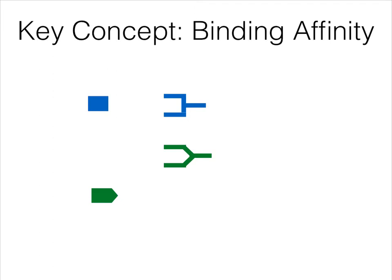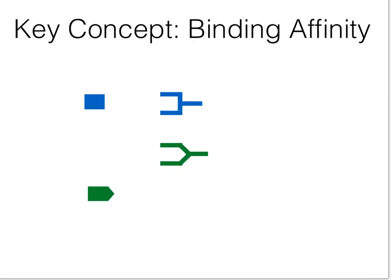You want your receptor to only bind a particular type of ligand. You can see this blue receptor can bind this blue ligand — they have a shape that matches up, that is complementary. The blue receptor can't match up with the green ligand very well. So if both receptors are on the same cell and you hit it with the blue ligand, the blue receptor would activate — maybe telling the cell to take up sugar. If you hit the cell with the green ligand, then the green receptor would become activated and the cell would have a different response, possibly stimulating cell division — mitosis.